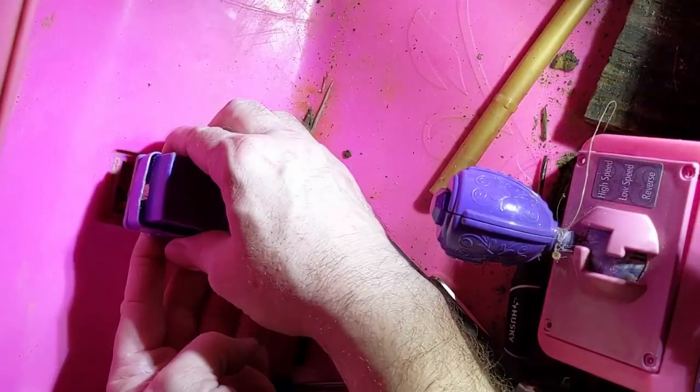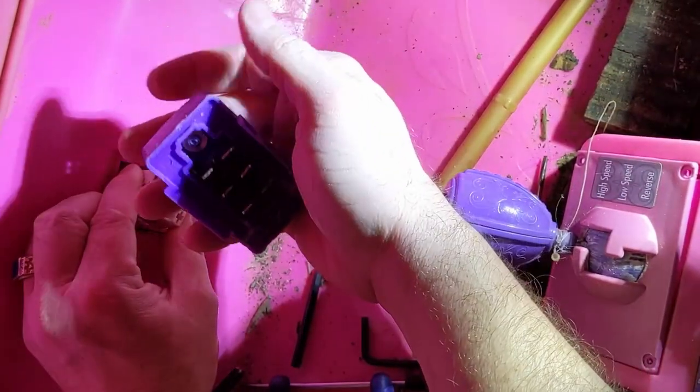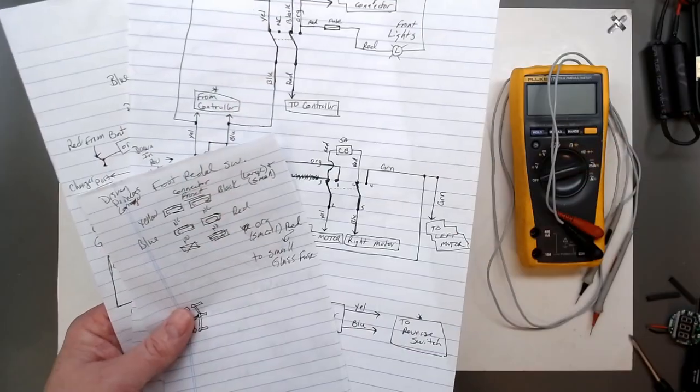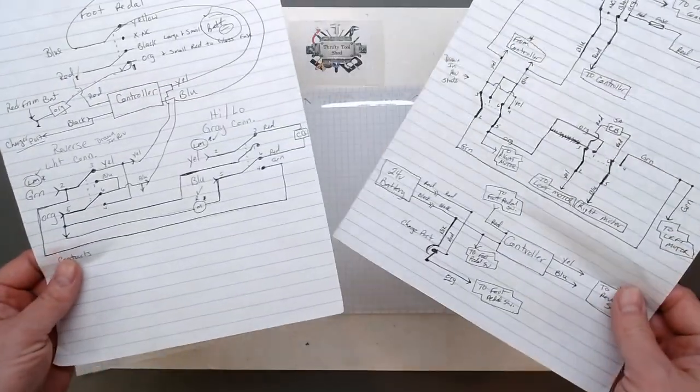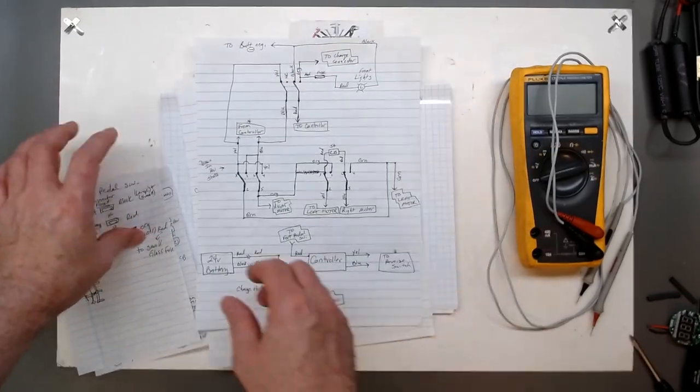So we also have videos on the foot pedal switch replacement for this carriage. I'm going to try to do one for the speed controller as well as try to come up with a wiring diagram for troubleshooting. So please stay tuned for those videos as well. If you like the video please like, share, subscribe and thanks for watching.